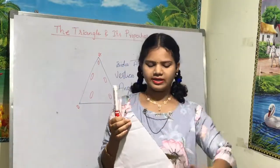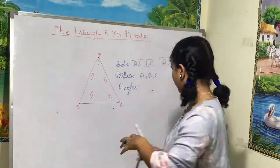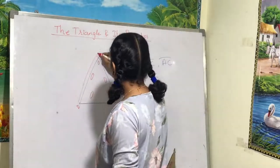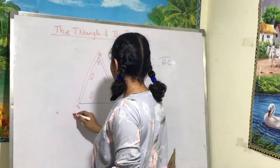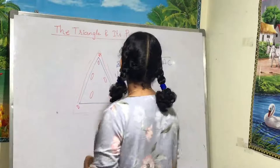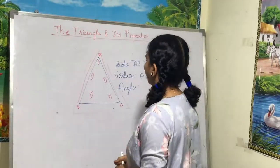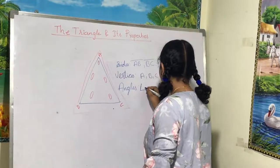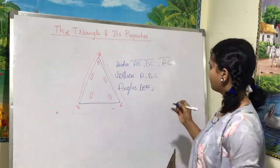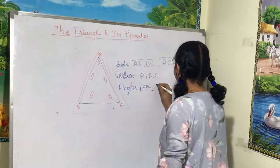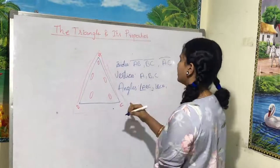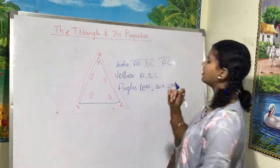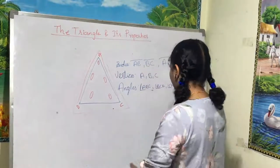So it has three angles: the first angle, the second angle, and the third angle. Let's name these angles: angle ABC, angle BCA, and angle CAB. That's the basic introduction to our triangle.